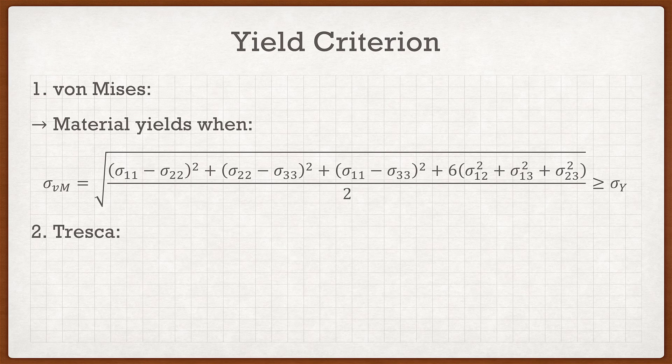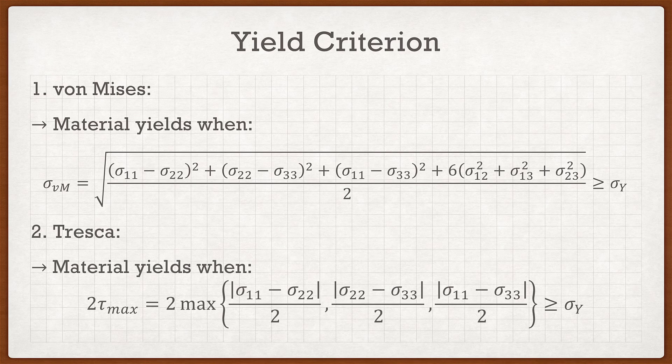Now the Tresca stress is very simple but has a trick that will confuse a lot of students. In general, the material yields when two times the maximum shear stress is greater than or equal to the yield point. The maximum shear stress is found by taking the absolute values of (sigma_11 minus sigma_22), (sigma_22 minus sigma_33), and (sigma_11 minus sigma_33), each divided by 2. Note that the factor of two in the criterion and the division by two in the shear formula cancel out, so the Tresca criterion is essentially a function of the differences between sigma_11, sigma_22, and sigma_33.